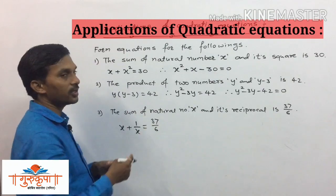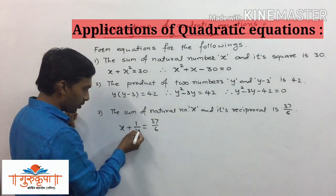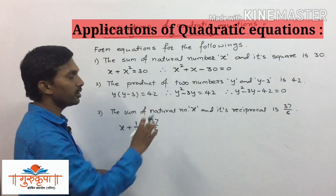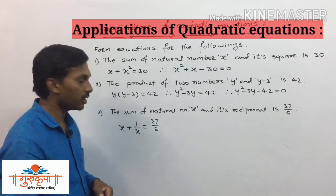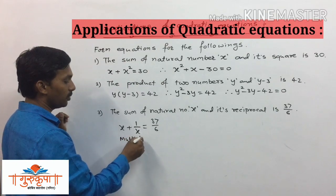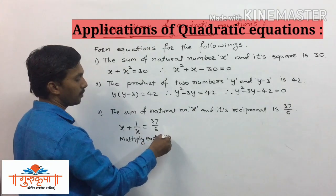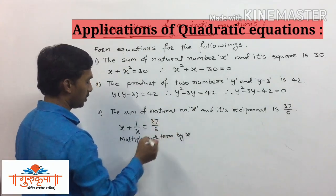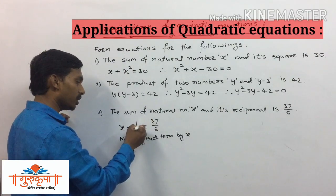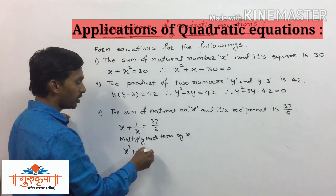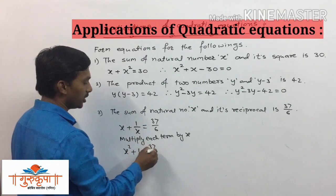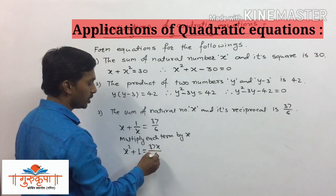We have a variable in the denominator, so we multiply each term by x. x multiplied by x gives x², and 1/x multiplied by x gives 1, and the right side becomes 37x/6.